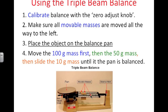If you move the movable masses all the way to the left and then turn this until this balance beam here is directly on the balance mark, when that happens, then you are ready to put the object on the balance pan.